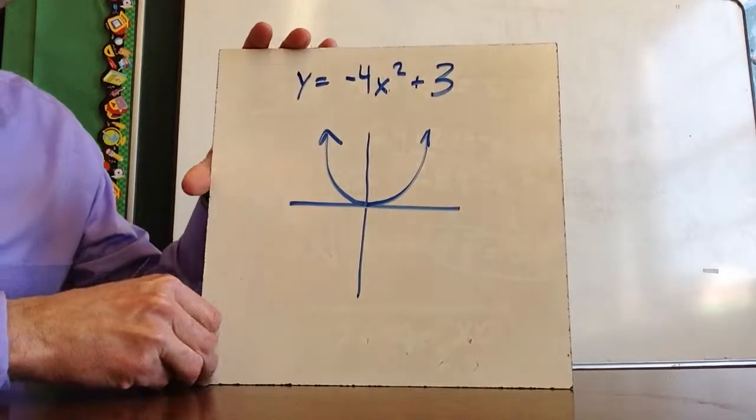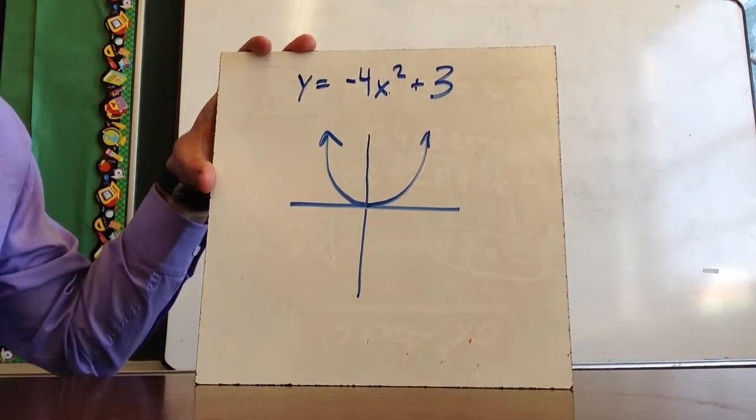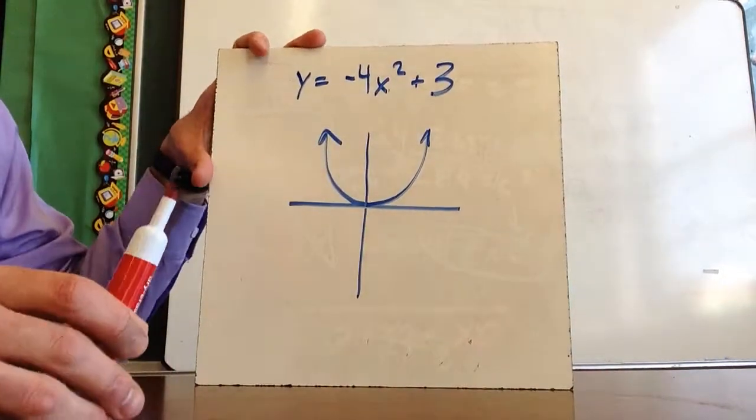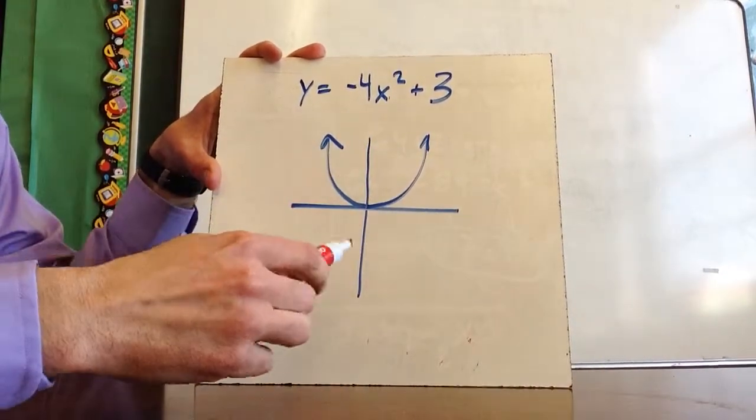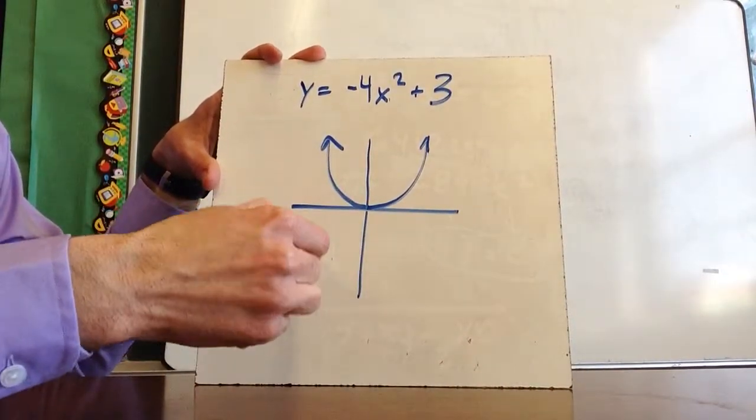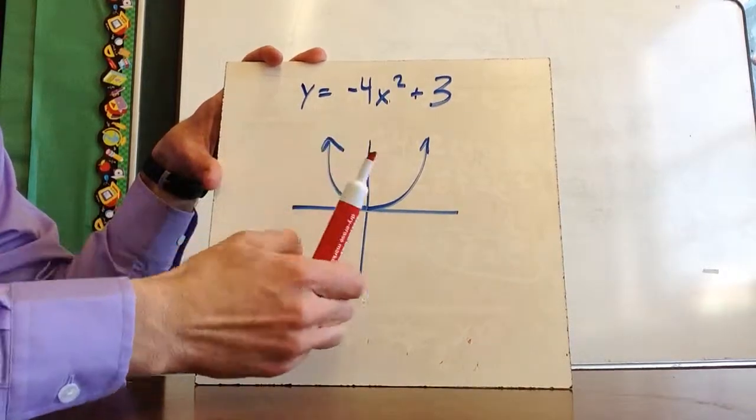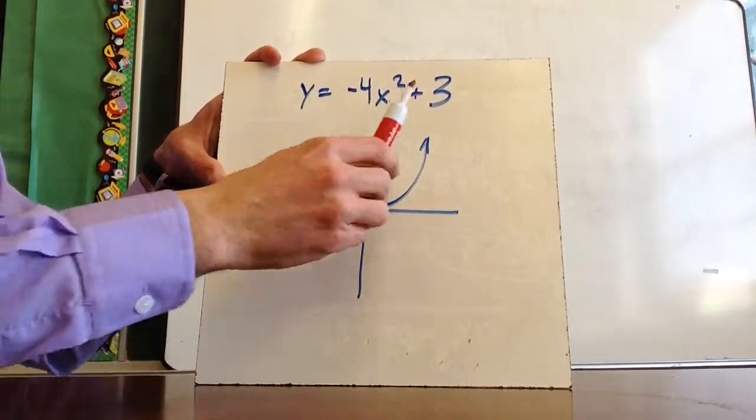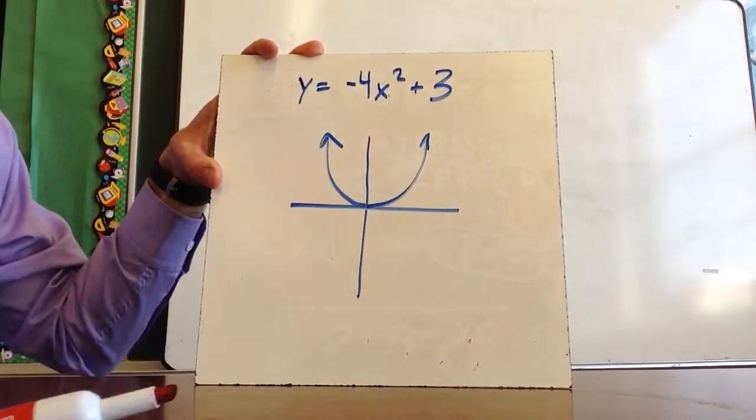Finally, putting a bunch of ideas together, what's going to happen with y = -4x² + 3? Thinking about what we're going to do before drawing this: the negative will flip it upside down, so I know my graph is going to be an upside-down U. The 4 is going to push it together, so it's going to become almost an upside-down V. And the 3 is going to move it up 3.